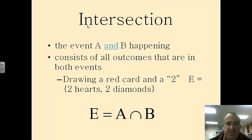Pretty easy to remember. If it looks like a U, it's a union. If it's upside down, it's an intersection.